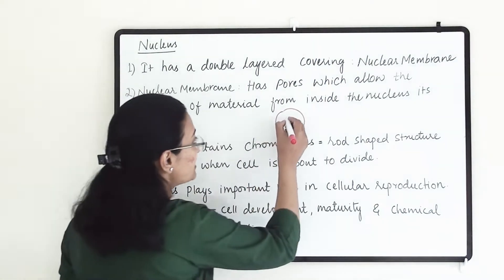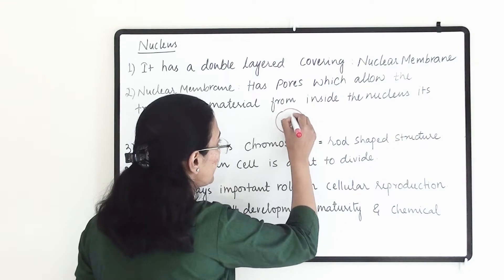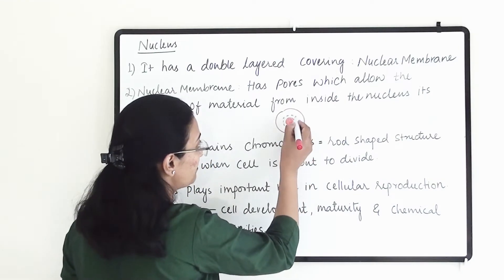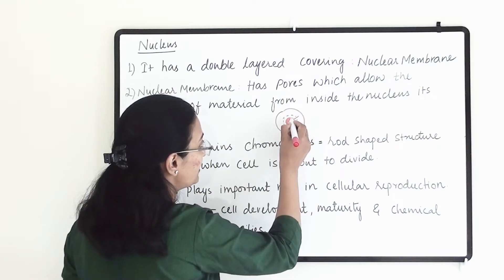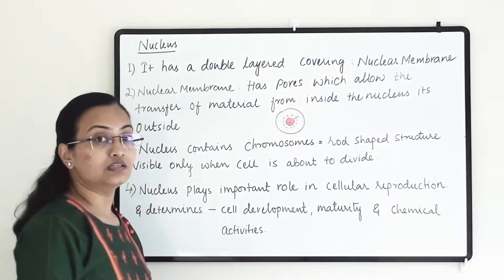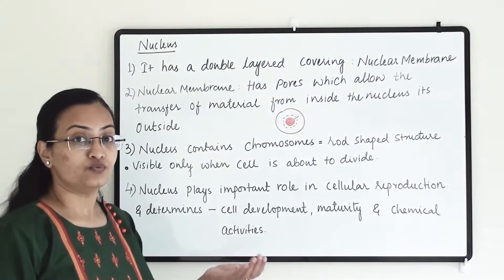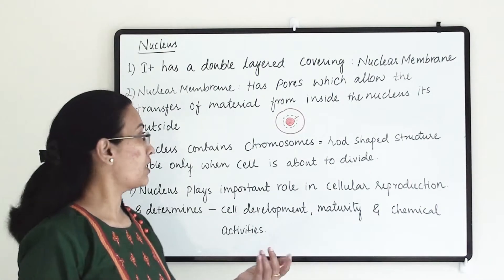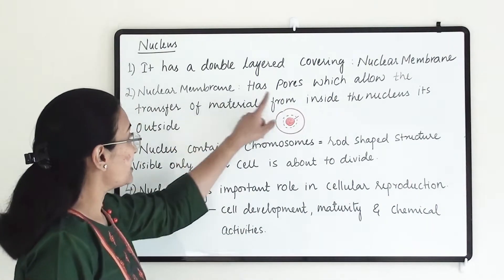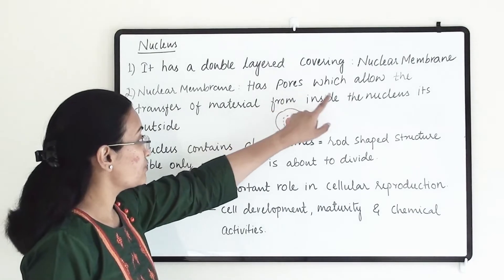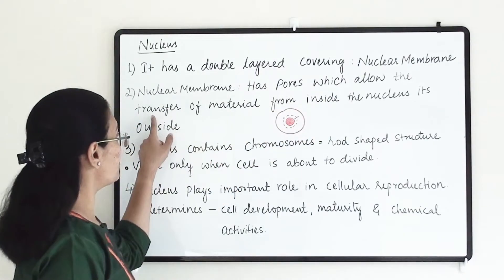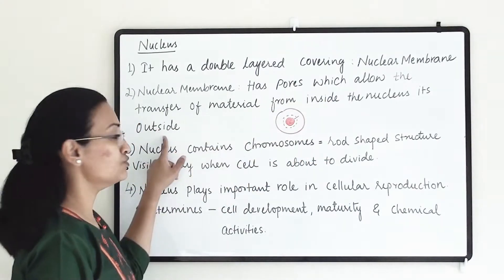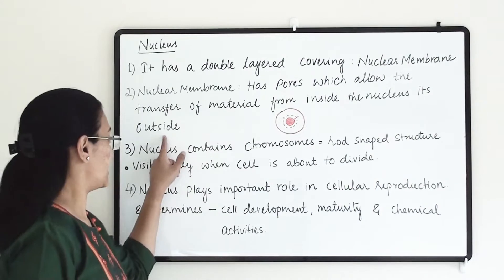The nucleus has an outer covering known as the nuclear membrane, and that will permit material to come in and go out. The nuclear membrane has pores which allow the transfer of material from inside the nucleus to outside.